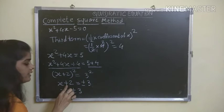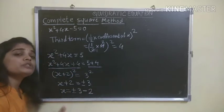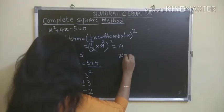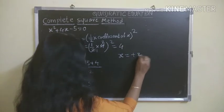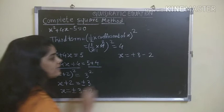To find the value of x: x = +3 - 2, and second time x = -3 - 2.